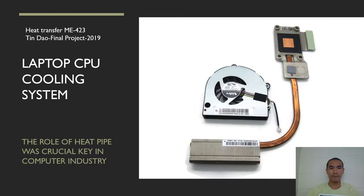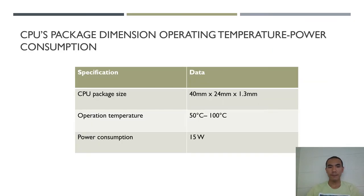The first part, I want to show you the laptop CPU cooling system without a heat pipe — I only use the fan to create a forced convection condition for cooling the CPU. On the picture, it is a full assembly of the CPU cooling system. The CPU package we are working on has dimensions of 40 mm by 24 mm and 1.2 mm in thickness.